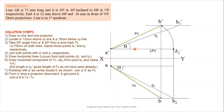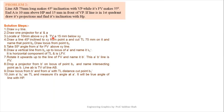Problem 2: Line AB is 75 mm long, makes 45 degree inclination with VP, while its front view makes 55 degrees. End A is 10 mm above HP and 15 mm in front of VP. Line is in first quadrant. Draw projections and find inclination with HP. Here: TL = 75 mm, Phi = 45 degrees with VP. The front view makes alpha = 55 degrees. We must solve the point example first.